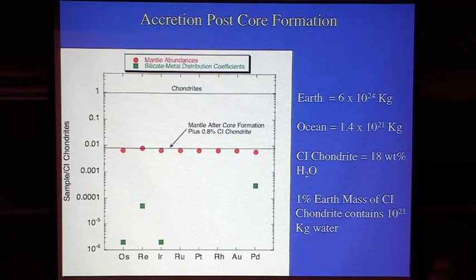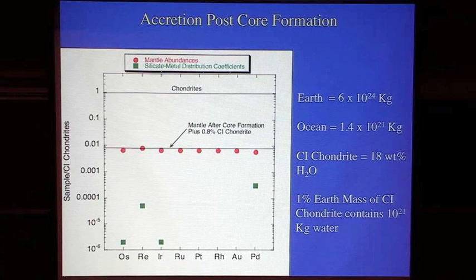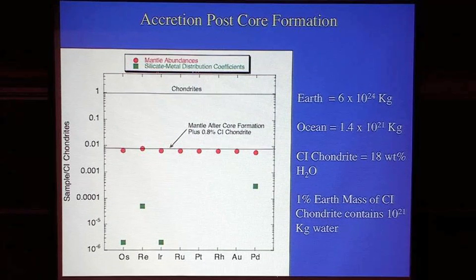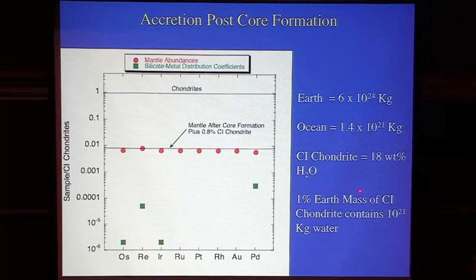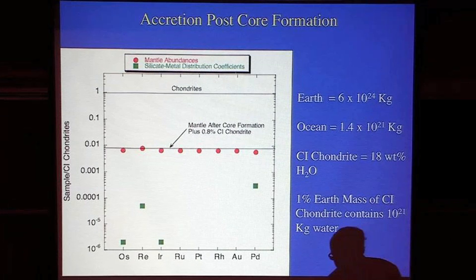These elements are so abundant in chondrites relative to the post-core-formation mantle that it doesn't take much chondrite to balance these abundances — basically overwhelming what's in the mantle and leaving flat patterns. It takes something like 1% of the mass of the Earth of some type of chondrite to bring these abundances up to the observed level. This 1% is interesting because if you think about 1% of an Earth mass of CI chondrite, which has about 18 weight percent water, it brings in something of the order of 10^21 kilograms — and today's oceans are about 10^21 kilograms. So this late veneer, this late addition after core formation, seems required to explain the highly siderophile elements, and it could also bring in all the Earth's water.